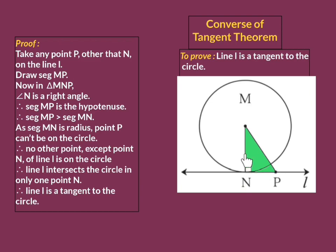In this right-angle triangle MNP, angle N is the right angle, so the side opposite to the right angle is the hypotenuse. Hence in this right-angle triangle, MP is the hypotenuse. We know the hypotenuse is the biggest side of any right-angle triangle. Hence MP is the biggest side of this triangle, which means MP is greater than MN and MP is also greater than NP. We take the pair MP is greater than MN — that is, segment MP is greater than segment MN. But segment MN is the radius.